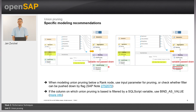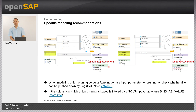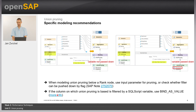Therefore, if you want to use union pruning, make sure that if some blockers are above it, you either use an input parameter to pass the value or ensure the blockers are removed by enabling something like a pushdown flag. If you filter on a column-based pruning column based on a script variable, the option 'Bind as Value' can be helpful. For more details, please have a look at the linked information.